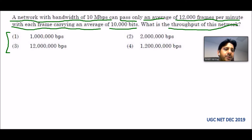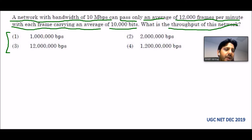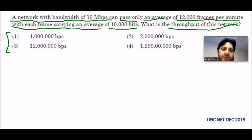First of all, we must know that bandwidth is the total capacity given to us, but throughput is the amount of data that can actually move from one place to another place. We have to find out the throughput.